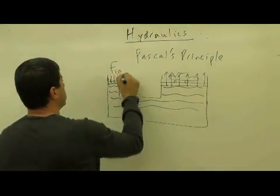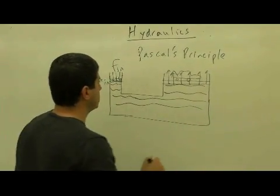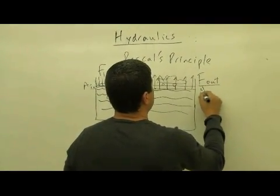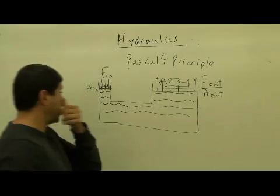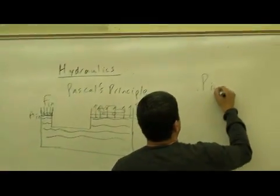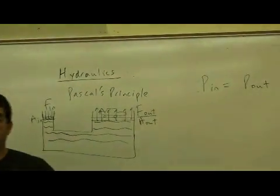So the final pressure here will equal the pressure here. So let's call this F in. Let's call this area in, the area of this piston. Let's call that F out, divide that by area out.